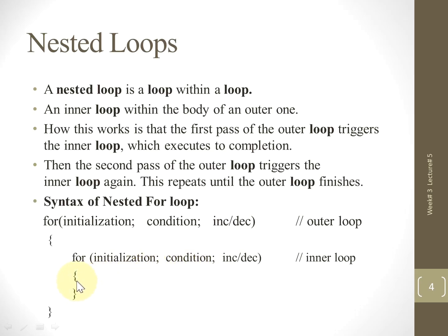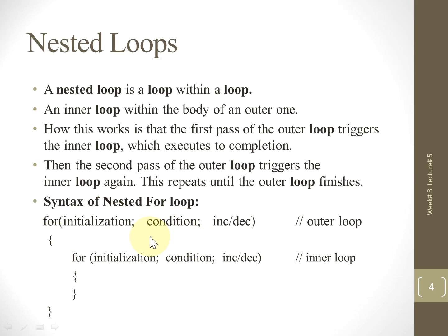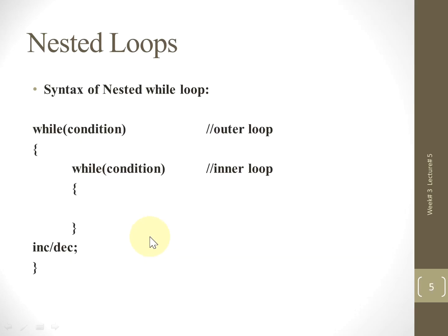The inner loop will continue to execute until the condition becomes false. When the condition becomes false, the control goes back to the outer loop's increment/decrement operation. The condition is checked a second time — once true, it comes back to the body of the outer loop and the inner loop is executed again. These steps repeat until the outer condition becomes false.